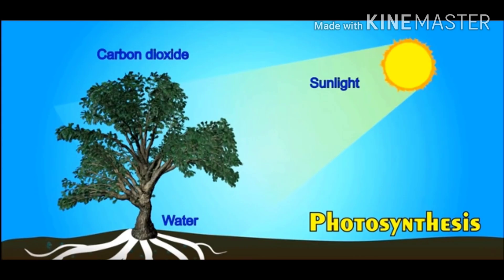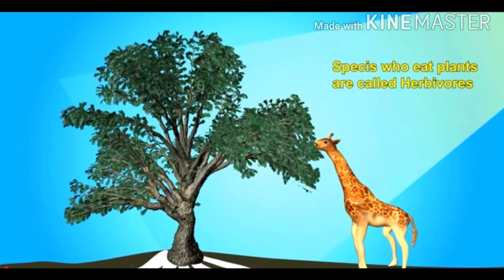Let's start with the plants. Children, plants are the only living species that make their own food. We all know that they make their own food by the process called photosynthesis. For photosynthesis they need carbon dioxide and water, and in the presence of sunlight they make their own food. All other species like humans and animals are dependent on plants for their food.